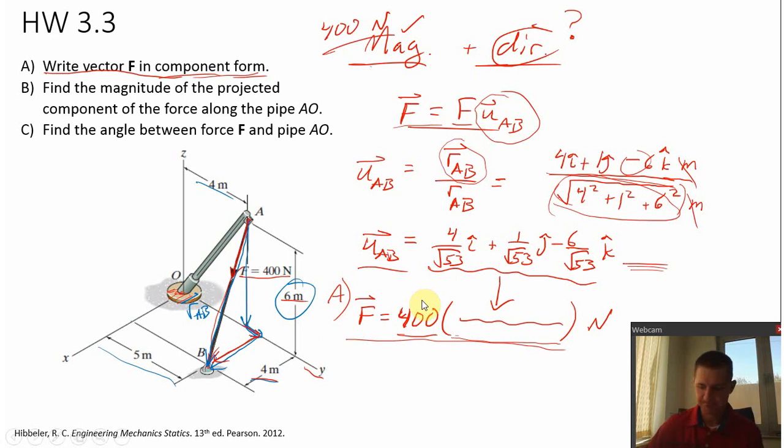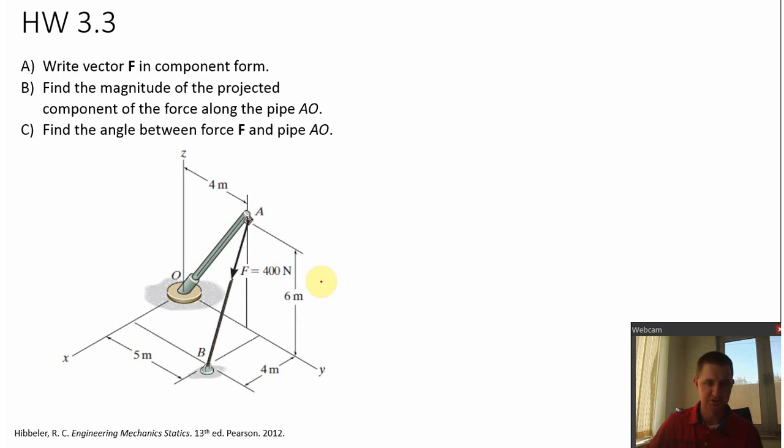Now for part B, it asks to find the magnitude of the projected component of the force along pipe AO, and it's talking about this 400 newton force. So what it's asking for, you see the force is directed from A to B, but it wants to know what amount of that force is actually directed from A to O here. So if they ask you to find a projection, the mathematical way to find that is by using a dot product. A dot product is a projection. So if I want to find the projection of vector F onto which axis? Onto the axis A to O, onto that axis.